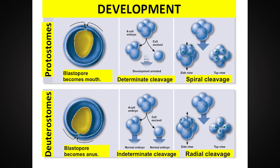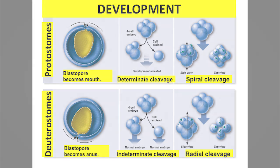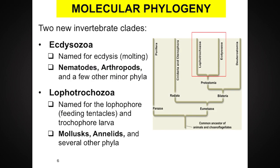Echinoderms are the only deuterostome we will mention in class. Instead of coeloms determining clades or groups, all protostomes now belong to two clades in molecular phylogeny: Lophotrochozoa or Ecdysozoa.